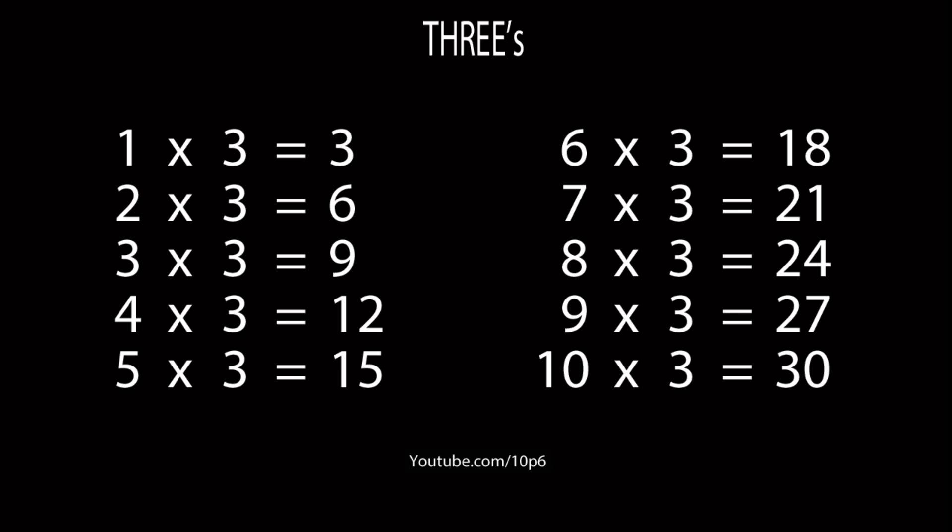3s. 1 3 is 3, 2 3s are 6, 3 3s are 9, 4 3s are 12, 5 3s are 15, 6 3s are 18, 7 3s are 21, 8 3s are 24, 9 3s are 27, and 10 3s are 30.